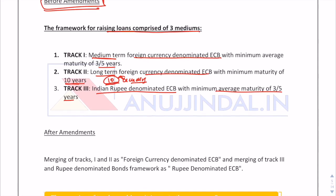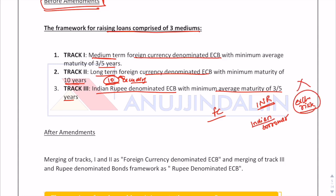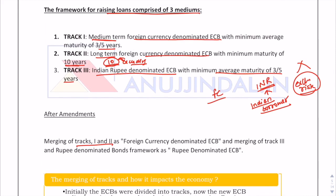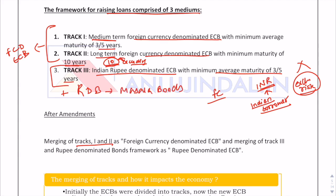ECBs could be raised in both foreign currency and Indian rupees. When ECB is raised in INR, the Indian borrower does not face exchange rate risk. After amendments, track one and track two have been clubbed into foreign currency denominated ECB, and track three plus RDB — also known as masala bonds — have been clubbed into Indian currency denominated ECB.